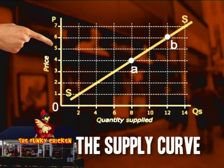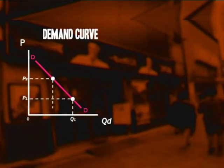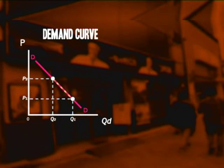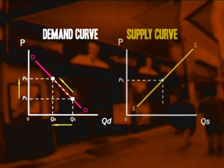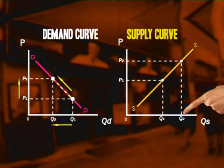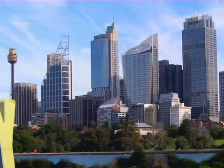Likewise, if the price drops, a movement down the curve takes place. But how does the supply curve differ from the demand curve for fried chicken pieces? Well, the demand curve shows that a higher price leads to a lower quantity demanded. But with the supply curve, a higher price leads to a higher quantity supplied. So that is the law of supply, which states that the higher the price, the higher the quantity supplied, and the lower the price, the lower the quantity supplied.